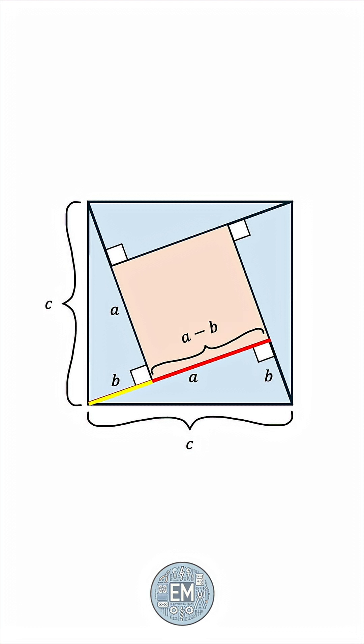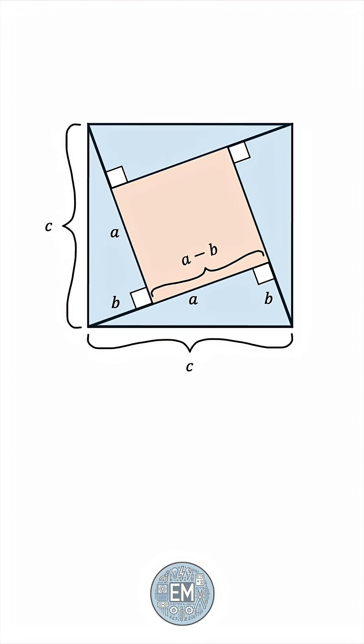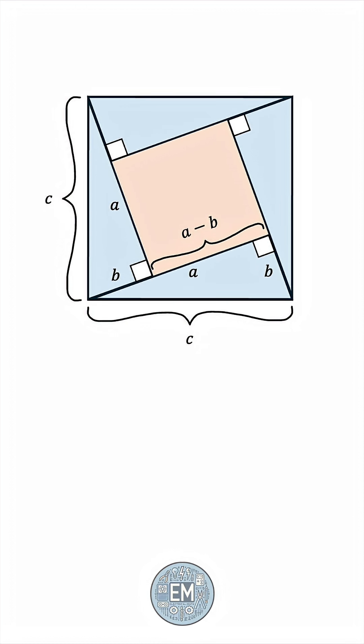Okay, how does this prove the Pythagorean theorem? Well, we can now find the area of the big square as the sum of the area of the inner square and the four identical triangles.